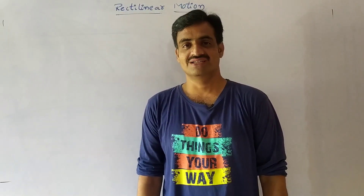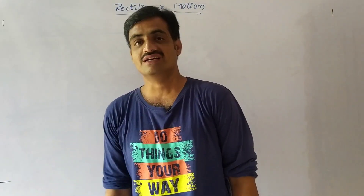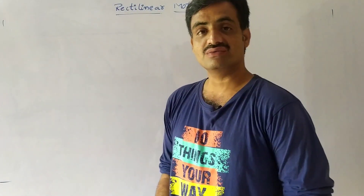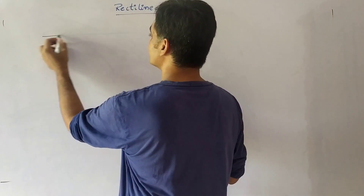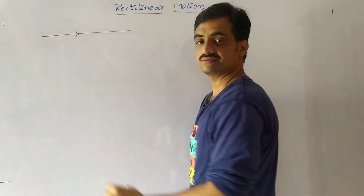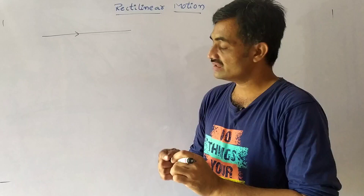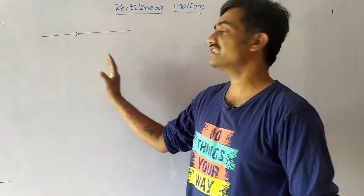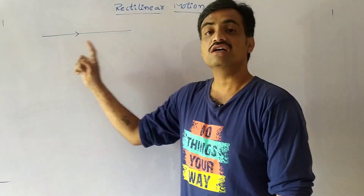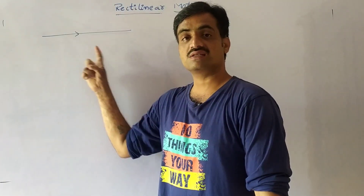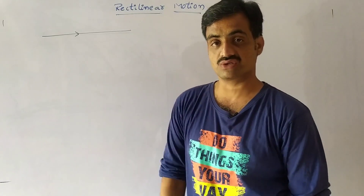Hello viewers, how are you? Today we are going to discuss about rectilinear motion. What is rectilinear motion? It means if a body travels along a straight line. According to mathematics, if a body travels from one point to another point along a straight line, then we can represent it as rectilinear motion.